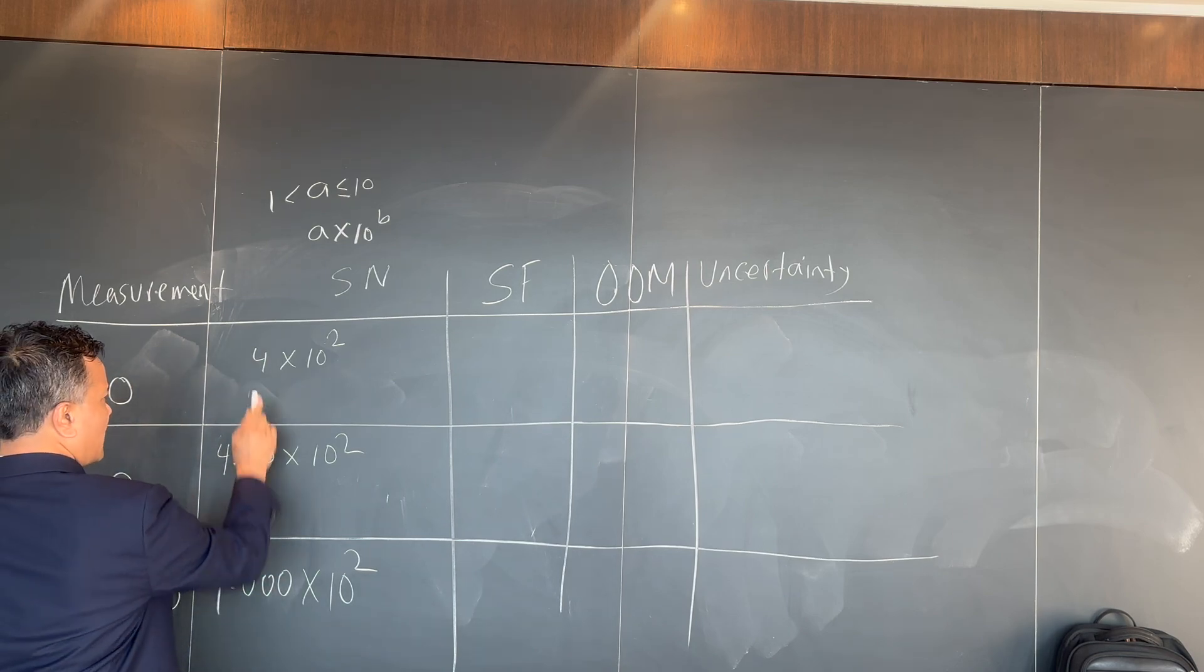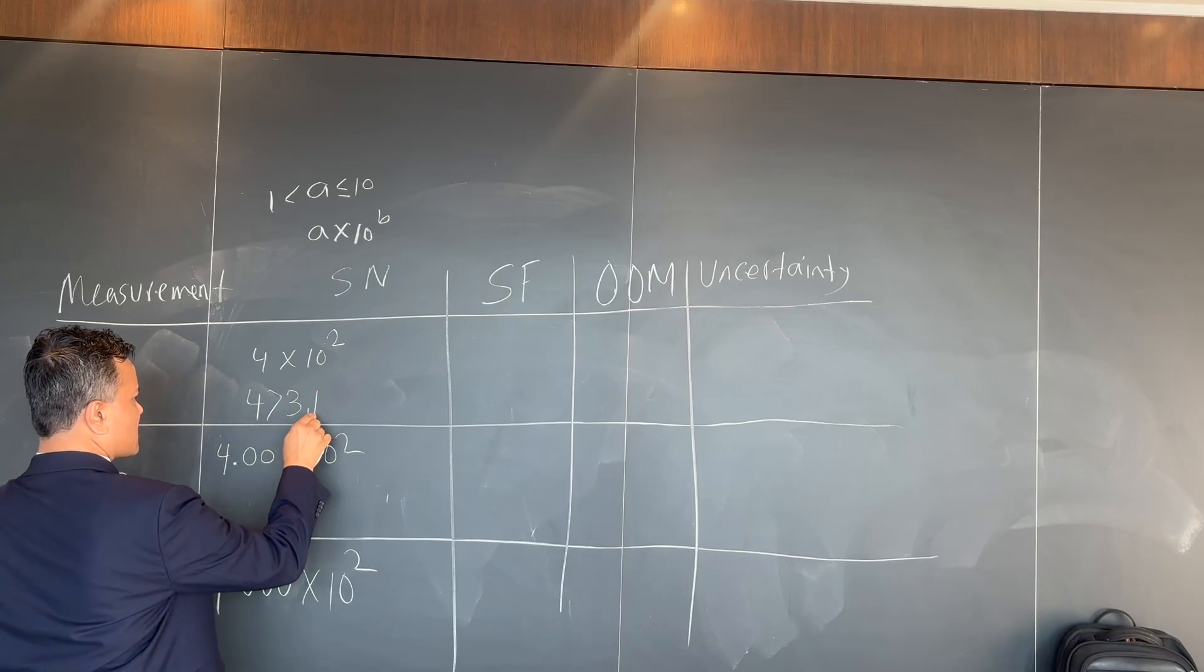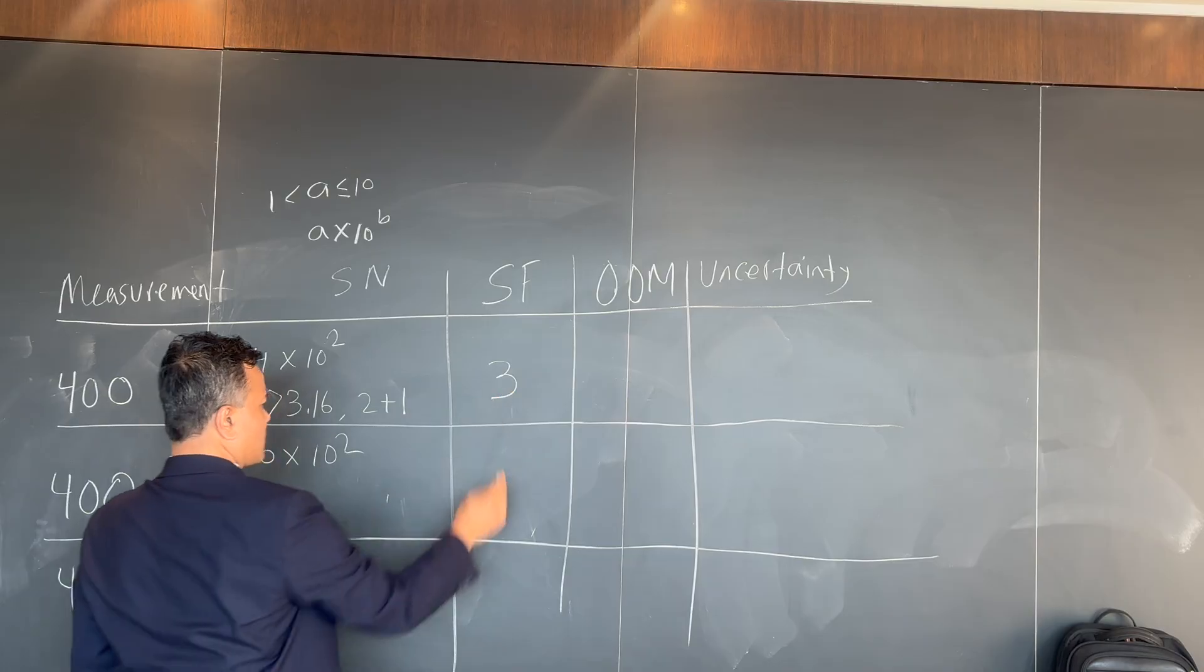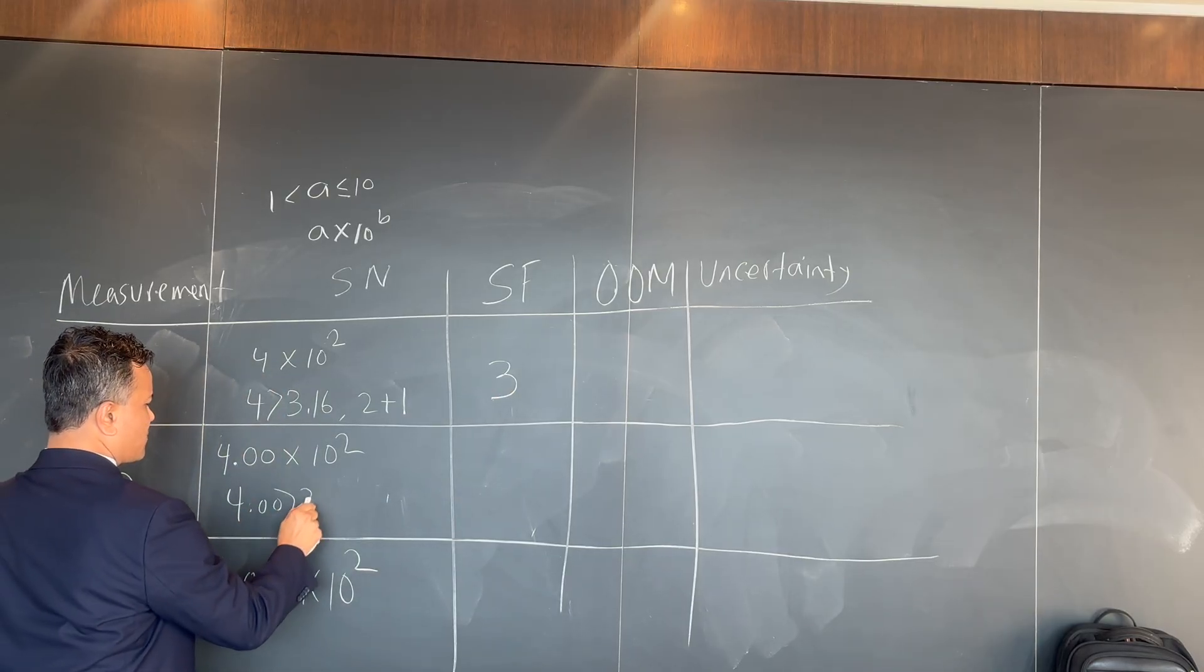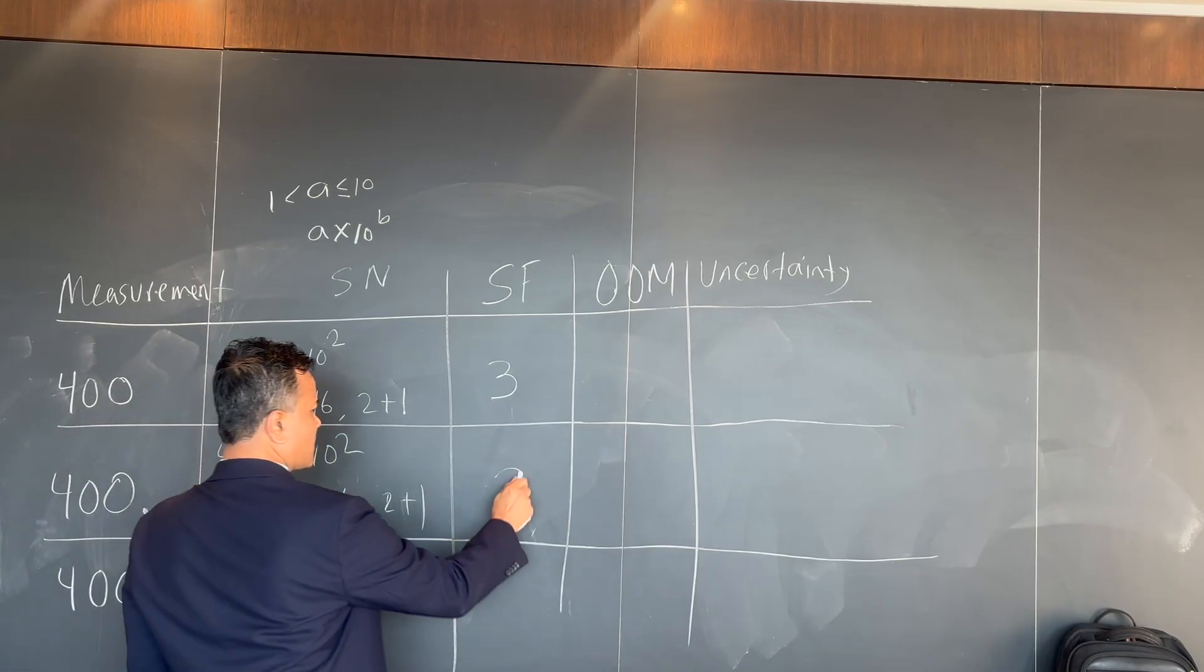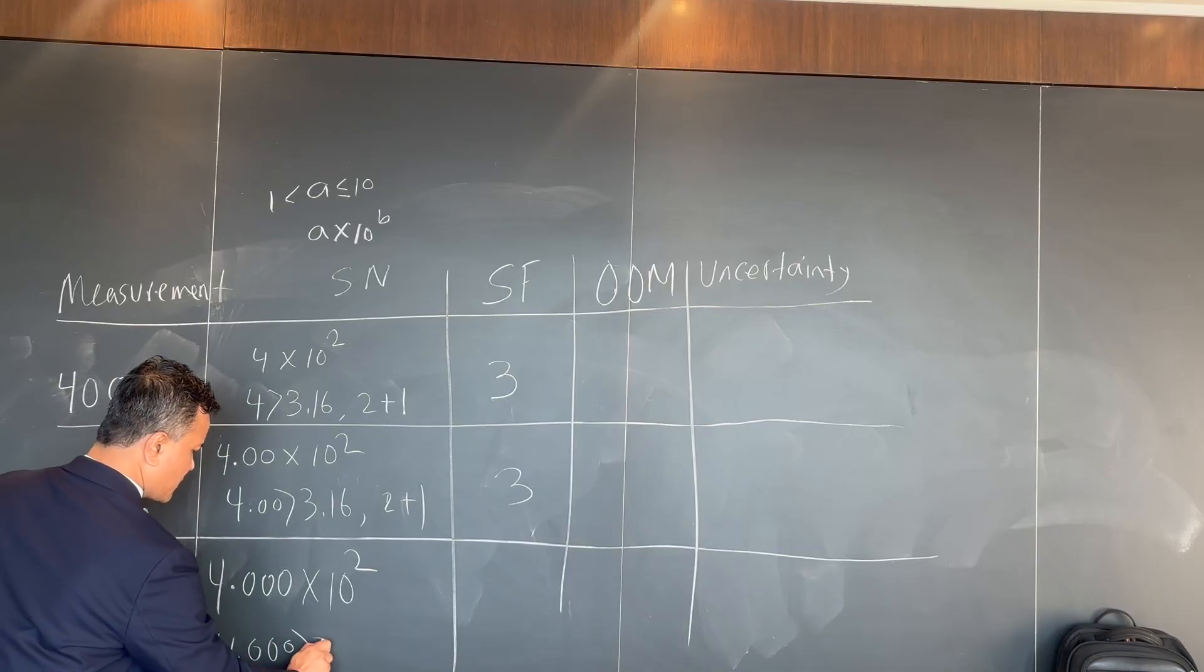Sig fig of course is three. Why? Four is greater than 3.16, so two plus one. Same thing over here, 4.00 which is greater than 3.16, so two plus one again. 4.000, which is greater than 3.16, so two plus one. This is three.